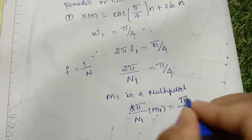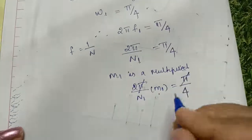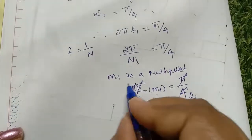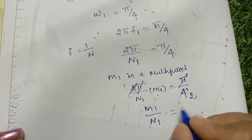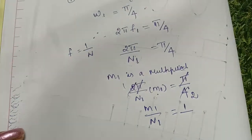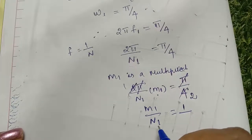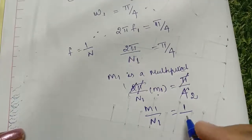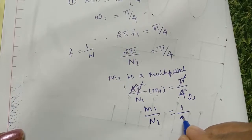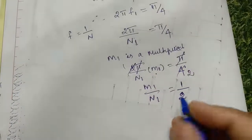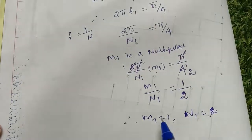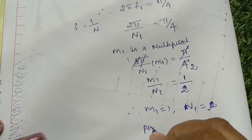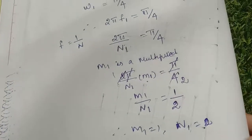After cancelling π and 2, we get m₁/N₁ = 1/2, so m₁ = 1 and N₁ = 2. Since we are getting constant integer values without any irrational factor like π, this is said to be a periodic signal. So the first term cos(π/4 · n) is periodic.